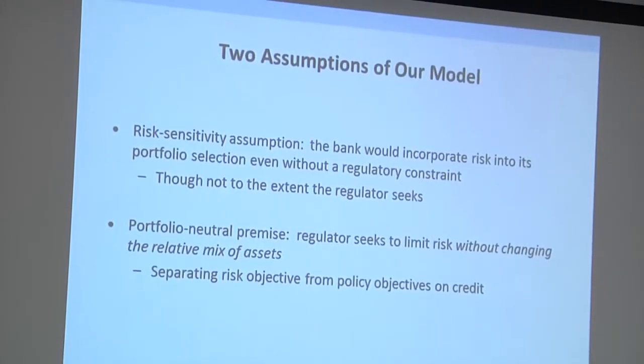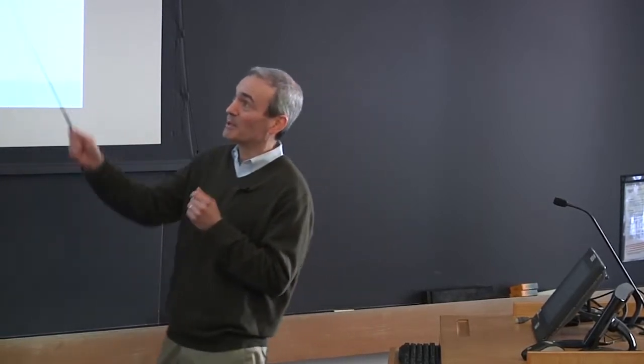All right, so, what do we do? So, two assumptions of our model. So, first we, there's a risk sensitivity assumption. So, we assume that a bank would incorporate risk into its portfolio selection even without a regulatory constraint. Now, you could debate whether you believe that or not, but at least we're being explicit about what we're assuming here. So, we assume that the bank would take risk to some extent, though not to the same extent that the regulator seeks. All right, so, that's actually important to make that assumption. The second is maybe more open to discussion and this is this portfolio neutral premise. So, the premise here is that the regulator seeks to limit the total amount of risk that a bank takes, but without changing the relative mix of assets. So, the regulator is not here trying to impose a view that we need to make more loans to farmers and fewer loans to commercial real estate developers. The regulator is agnostic on what the right mix is and actually is not trying to change the relative mix, but just sort of the total scale of the bank to limit its risk.